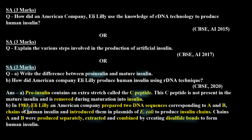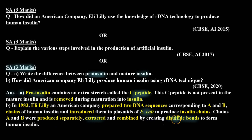Part B: In 1983, Eli Lilly, an American company, prepared two DNA sequences corresponding to the A and B chains of human insulin and introduced them into plasmids of E. coli to produce insulin chains. Chains A and B were produced separately, extracted, and combined by creating disulfide bonds to form human insulin.